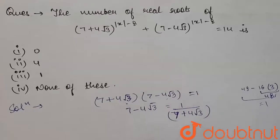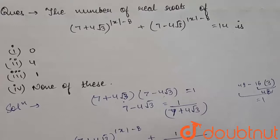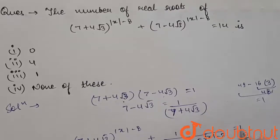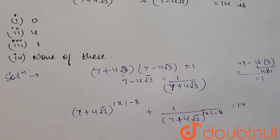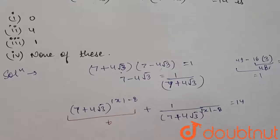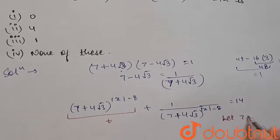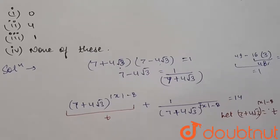Using this substitution, the given equation becomes (7 + 4√3)^|x−8| + 1/(7 + 4√3)^|x−8| = 14. Now let t = (7 + 4√3)^|x−8|. So the equation becomes t + 1/t = 14.